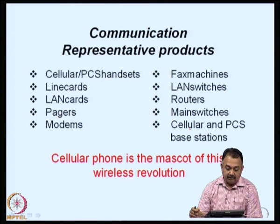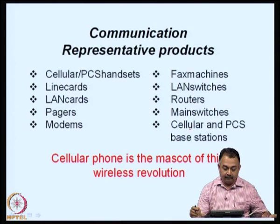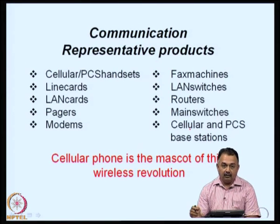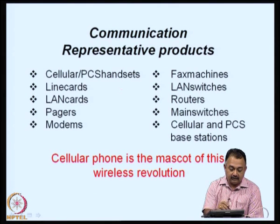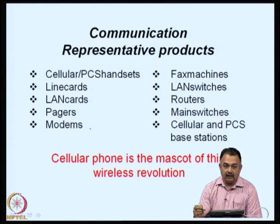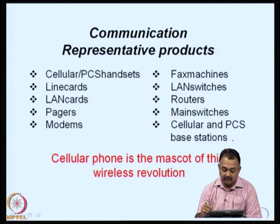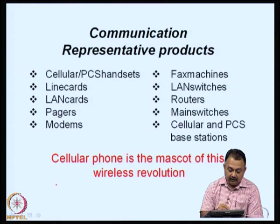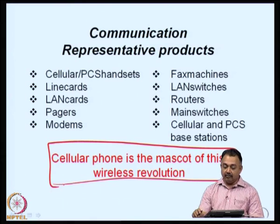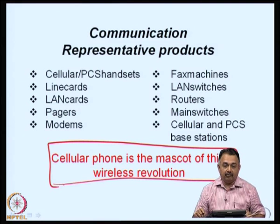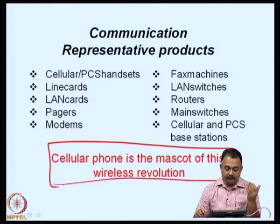If you look at representative products in communication, where you can see high growth and high volume: cellular, PC handsets, line cards, LAN cards, pagers, modems, fax machines, LAN switches, routers, main switches, and cellular and PCS base stations. One thing that can be said about the entire communication products scenario is that the cellular phone is the mascot of this wireless revolution. Today, when you talk about packaging in communication, everybody talks about the cellular phone.